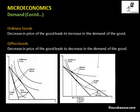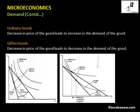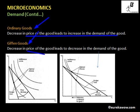Let's continue our discussion on demand. Ordinary goods are those goods for which a decrease in the price of the good leads to an increase in the demand of the good. Giffen goods are those goods for which a decrease in the price of the good leads to a decrease in the demand. So if the price of the good is inversely proportional to the demand, it is an ordinary good, whereas if the price is directly proportional to the demand, it is a Giffen good.